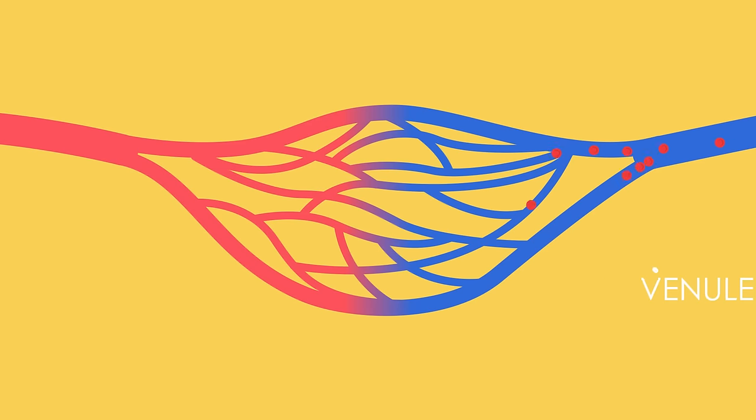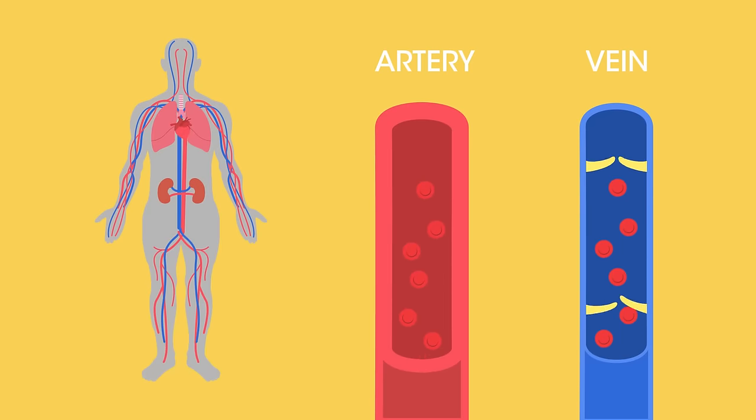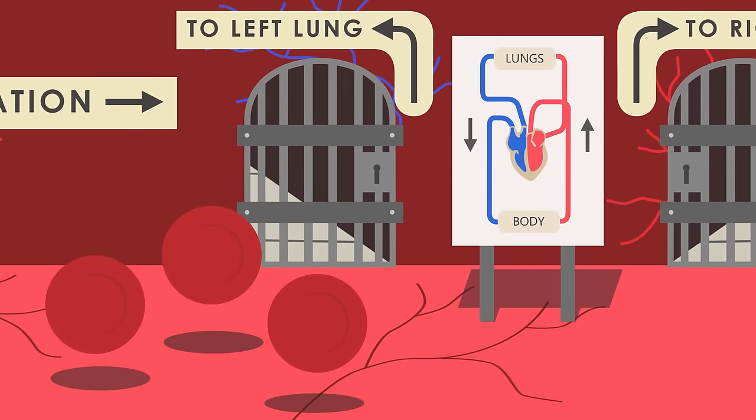Deoxygenated blood then travels away from the capillaries into the venules and then into the veins. Unlike arteries, veins have much thinner walls and valves that prevent deoxygenated blood from flowing backwards. This deoxygenated blood doesn't travel straight to the lungs to become oxygenated.